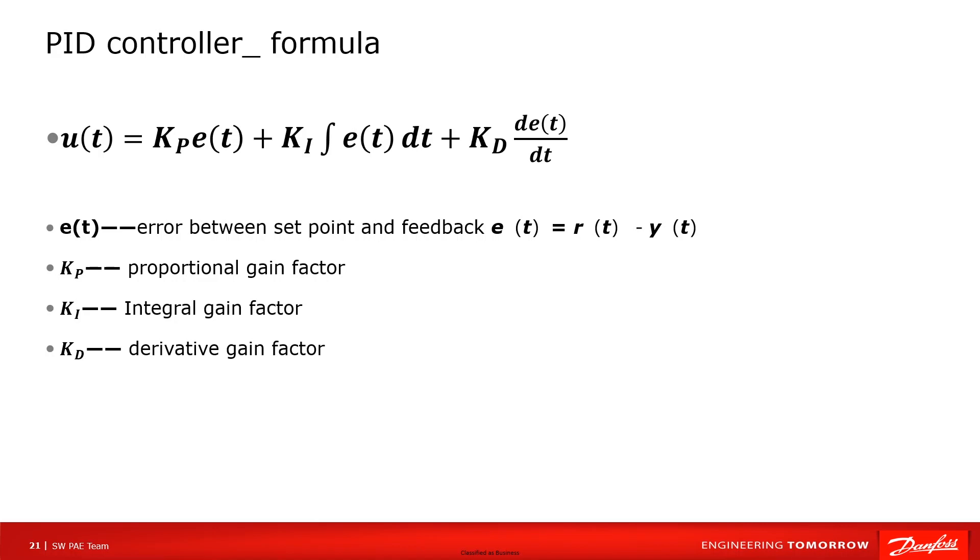Ki is the integral gain factor. I controller is integrated to the actual value of error. Because of integration, small error could result in high integral response.